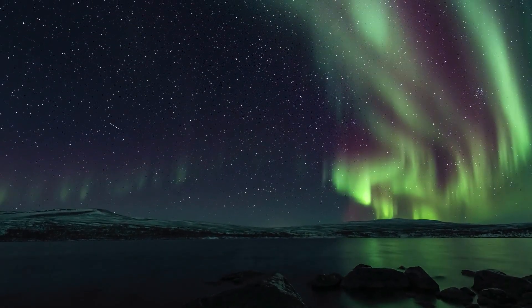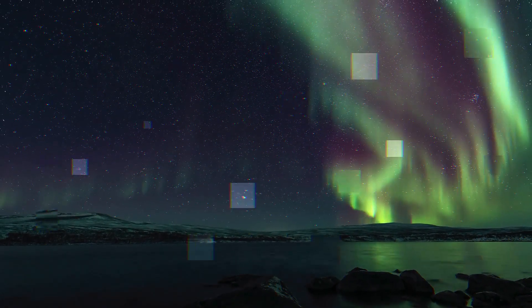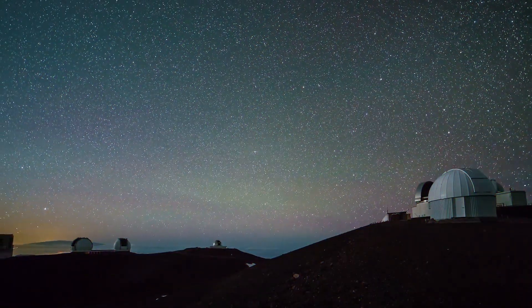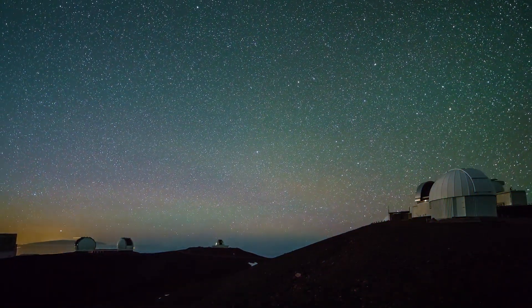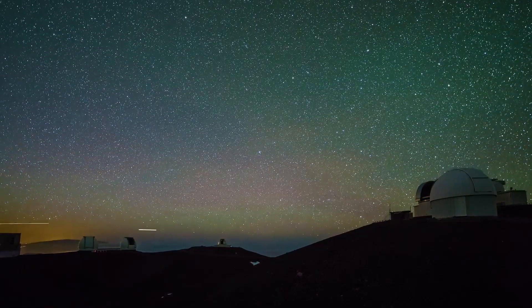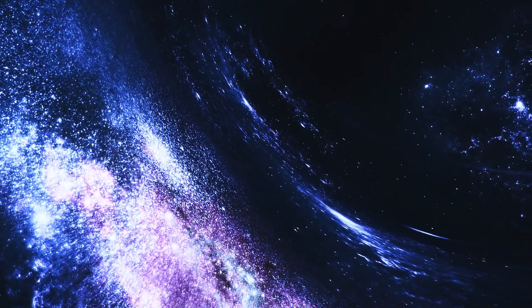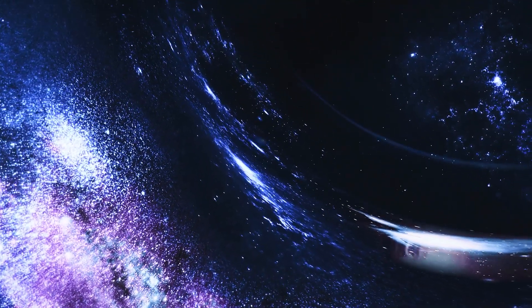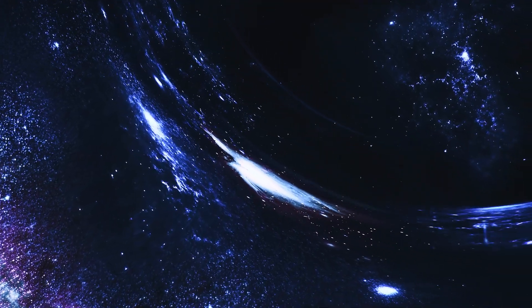Galaxy clusters are huge cosmic structures that can consist of hundreds or even thousands of galaxies. But galaxies themselves occupy only a small fraction of such structures. The rest of the cluster mass is represented by mysterious dark matter and very hot gas, which can reach temperatures of 10 million degrees Celsius.